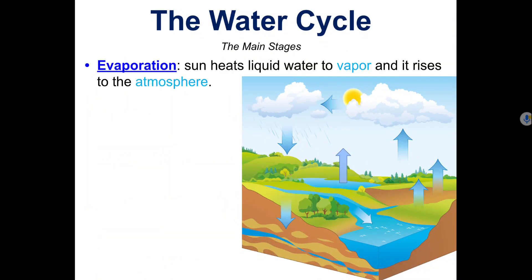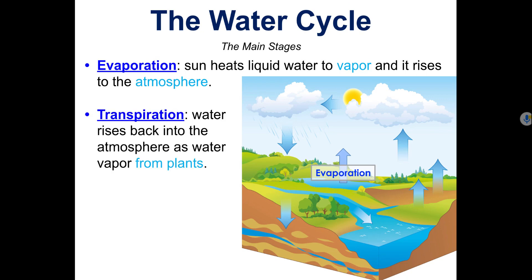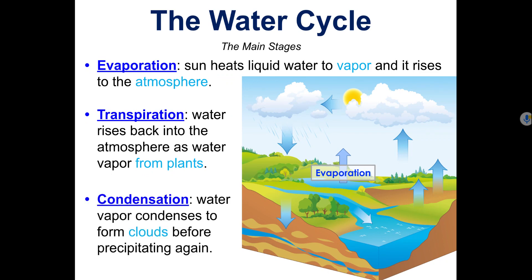Next comes evaporation. Evaporation is when the sun heats liquid water and it becomes a vapor that rises into the atmosphere. Closely related to this is transpiration, which is when water rises back into the atmosphere but the water comes from plants. Then there's also condensation, which is when water vapor condenses to form clouds before precipitating again.